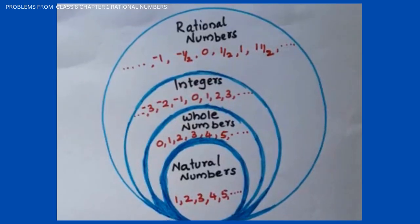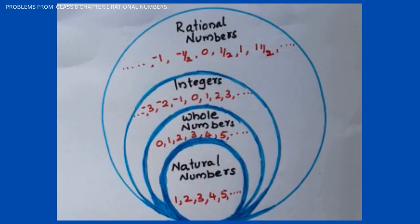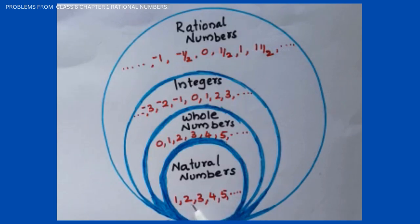For the solution of this problem, we should understand the basis of numbers. What are natural numbers? Natural numbers are the numbers from 1 to infinity — that is 1, 2, 3, 4, 5, etc., up to infinity.